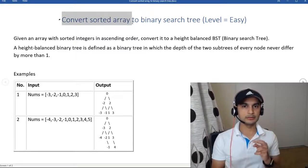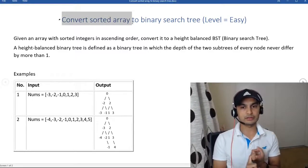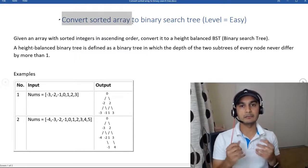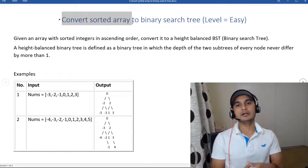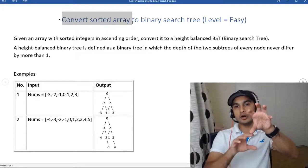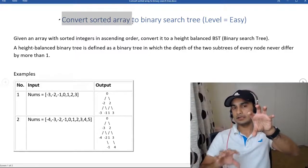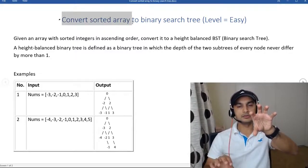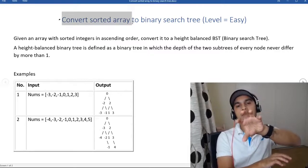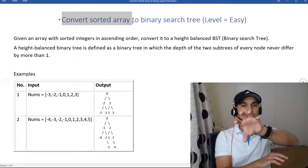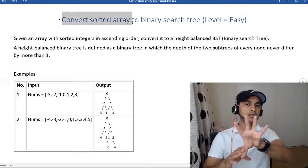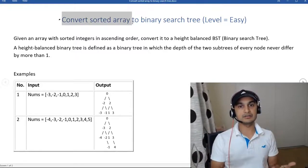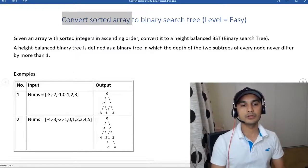There are two important things to note. First, it's a binary search tree. A binary search tree is a binary tree where the root node is always greater than the left child — so left child is smaller than root — and the right child is always greater than the root. So the root is the middle, left child is smaller, and right child is bigger.